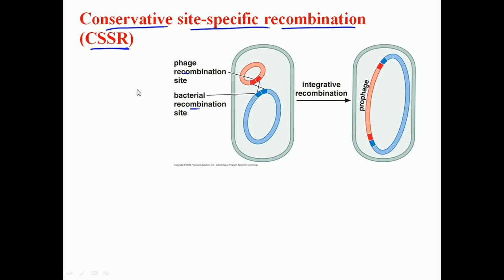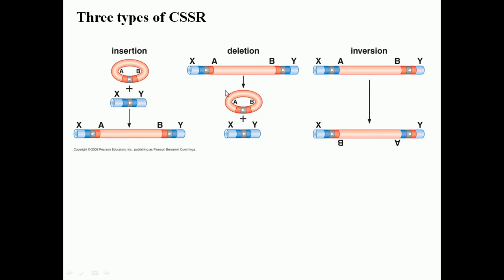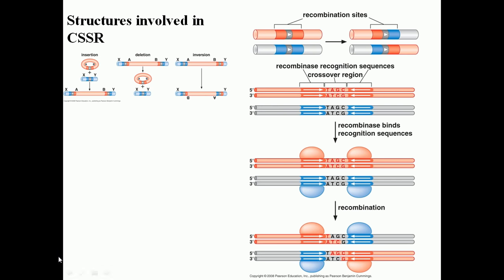We see a lot of site-specific recombination between phage genomes and bacterial genomes. During phage development, the phage injects its DNA into the bacterial cell, and the phage genome recombines with the bacterial genome, incorporating phage genomic content. This allows the phage to use the bacterial replication, transcription, and translation machinery to produce its own proteins — this is how bacteriophage hijacks the bacterial cell.